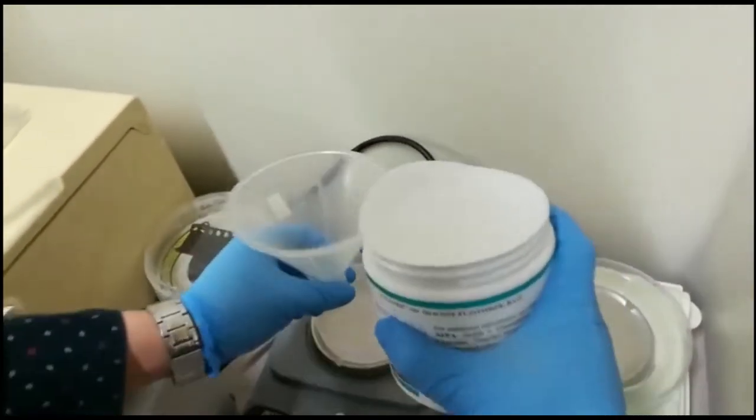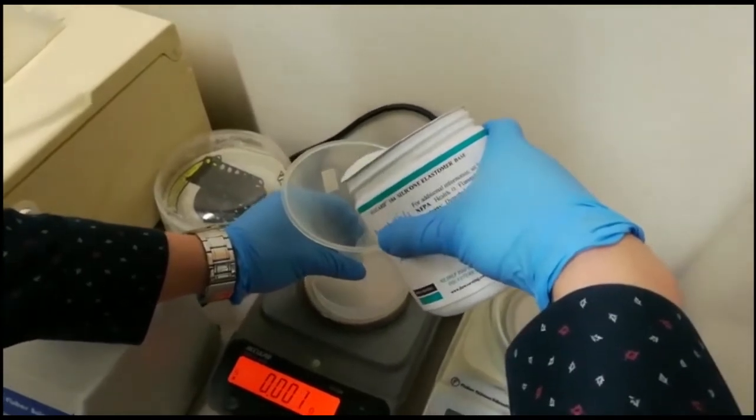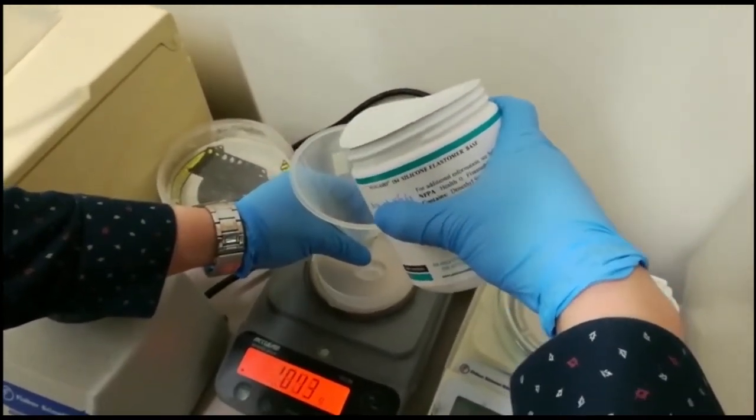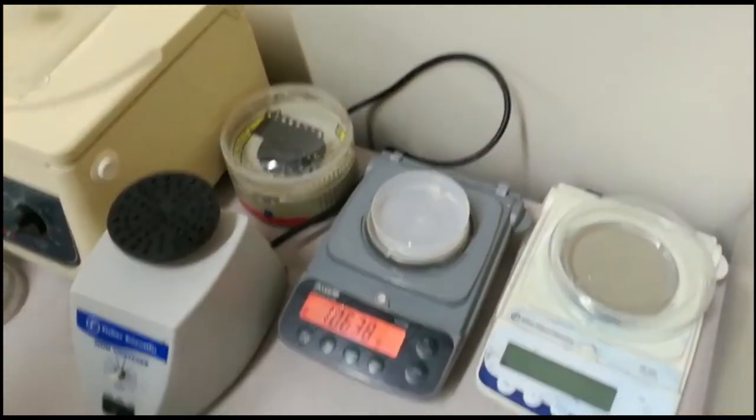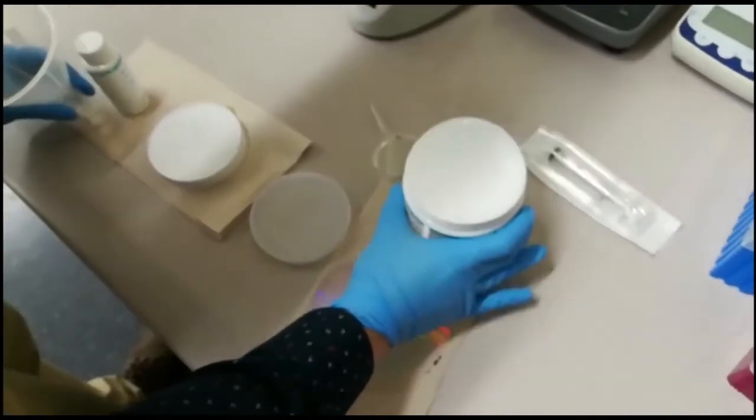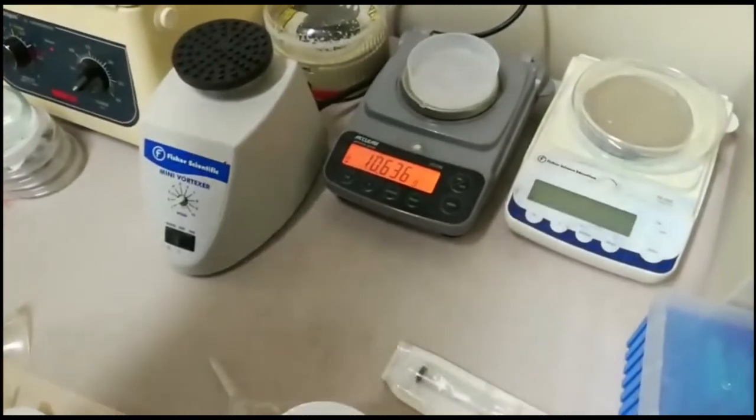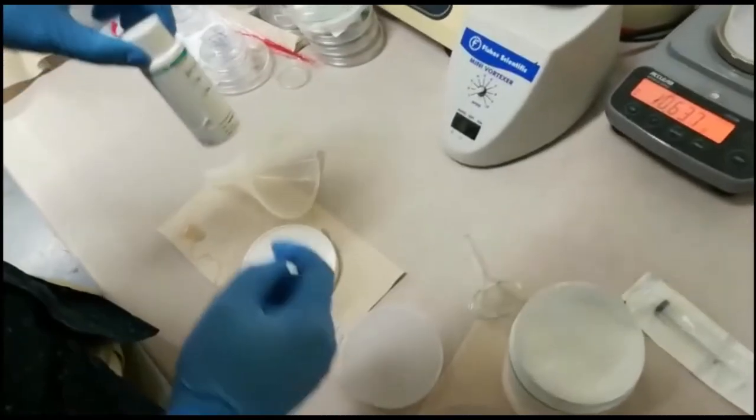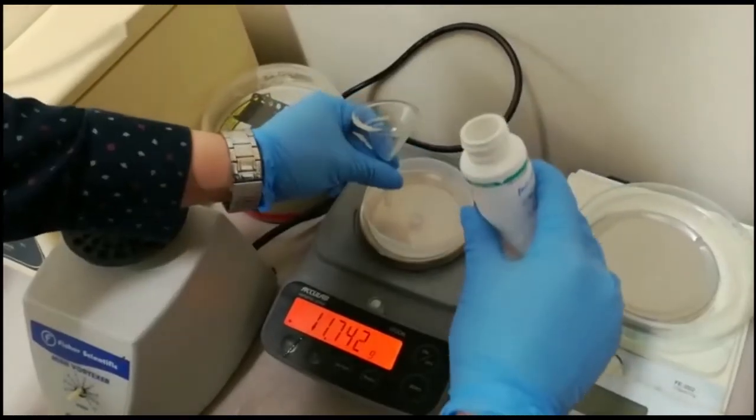We use this funnel and we want 10 grams of PDMS. Now we have about 10 grams of PDMS, and then we want 1 gram of curing agent for PDMS.